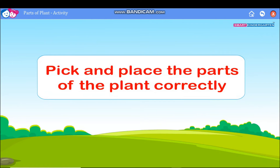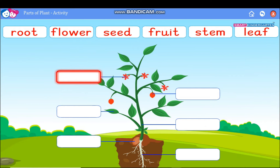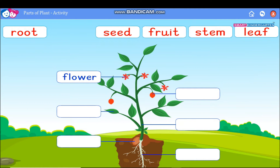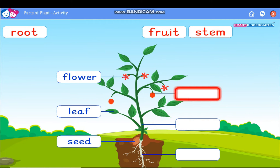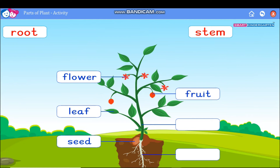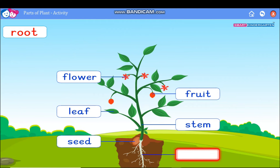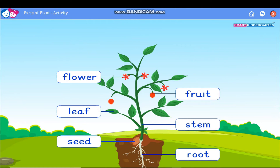Place the parts of the plant correctly. Children, you have to tell each part of a plant. What is this? Flower. What is this? Leaf. Come on, tell — what is this? Seed. What is this children? Yes — fruit. What is this? Stem. Come on, yes — it is a root.